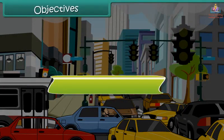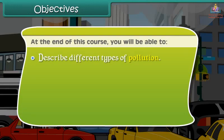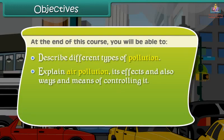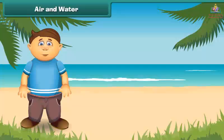Objectives. At the end of this course, you will be able to: describe different types of pollution; explain air pollution, its effects and ways and means of controlling it; describe water pollution, its effects and ways and means of controlling it; and explain noise pollution and soil pollution.